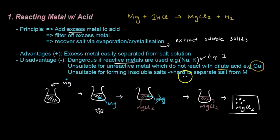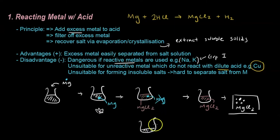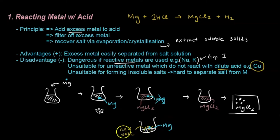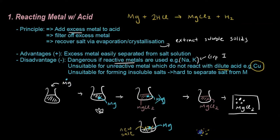Finally, this method is not suitable for creating insoluble salts because it's hard to separate the salt from the metal. Imagine if you created an insoluble salt — it would still be in powder form mixed with the excess magnesium metal. It's like having salt and pepper mixed together; you cannot physically separate them. So if the salt cannot dissolve in the acid, it's literally impossible to separate it from the metal.